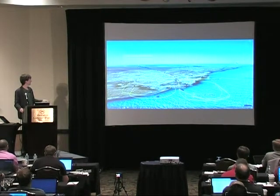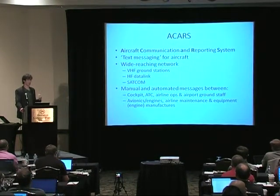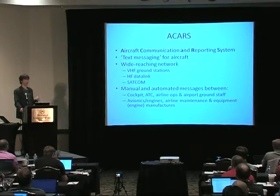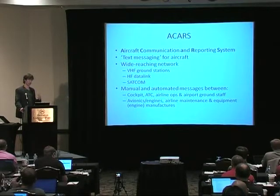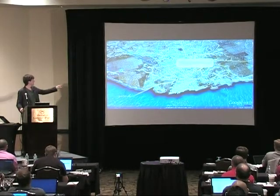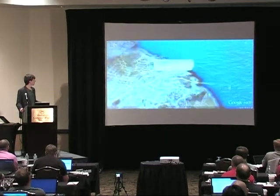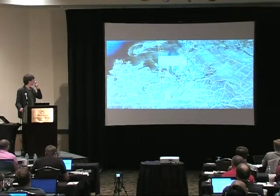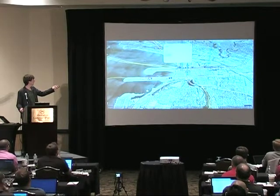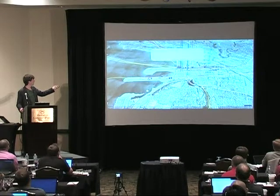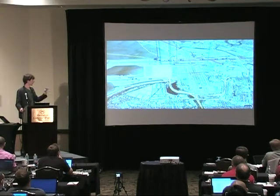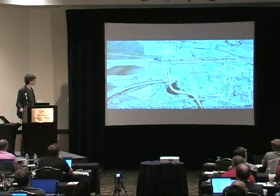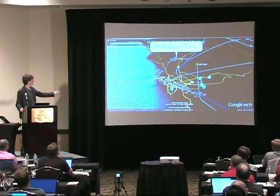Those balloons and dots you may have seen are ACARS — a very interesting network that's been around for quite some time. It's essentially a text messaging system that sends information back and forth between the cockpit, air traffic control, airline operations, and ground staff. There's also really interesting stuff — for example, engines will send back performance reports and vibration information to Rolls-Royce. Here's a quick video — you can see a flight taking off transmitting a whole bunch of messages. Zooming into the airport, there's a United Arab Emirates plane about to squitter like crazy upon landing, which is when airline operations like to know all this sort of stuff.